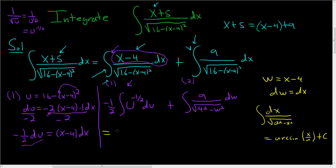So this is equal to negative 1 half. Here we add 1, so we get u to the 1 half. And then we divide by 1 half. Here we use the formula, so it's simply 9 arc sine of w over 4 and then plus our constant.